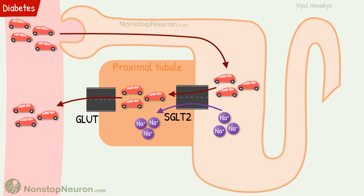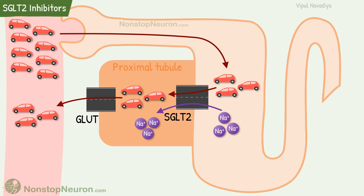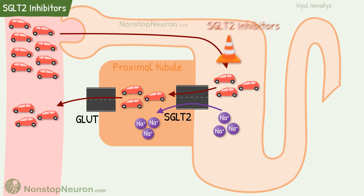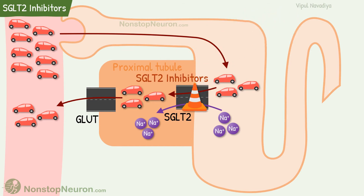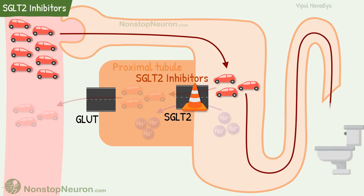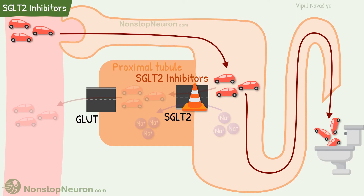In diabetes, blood glucose level is increased and we want to keep it in control. One group of drugs that helps us do that is SGLT2 inhibitors. These drugs include canagliflozin, dapagliflozin, and empagliflozin. They inhibit SGLT2, so glucose reabsorption is decreased and it is lost in urine. So blood glucose level falls. It's that simple.